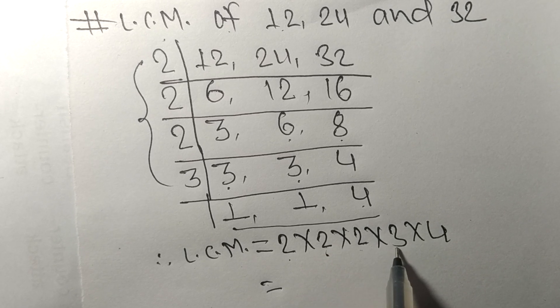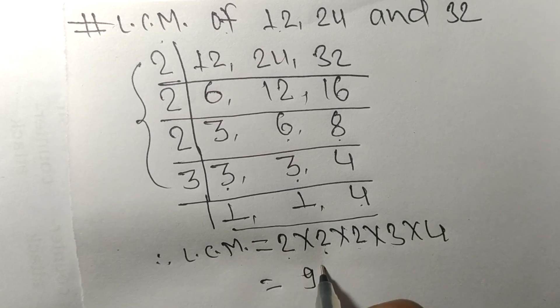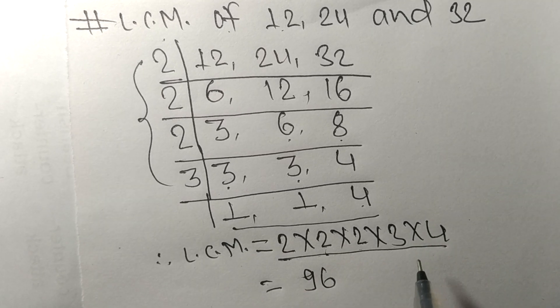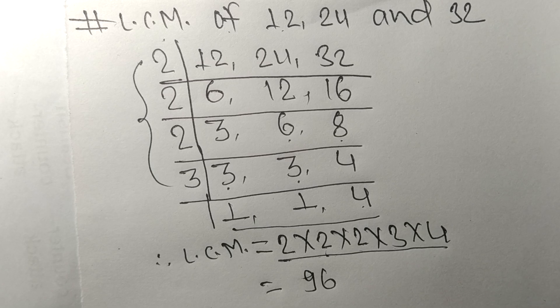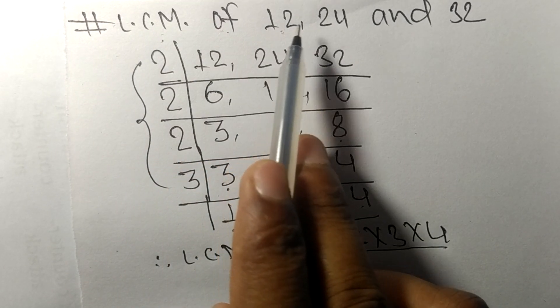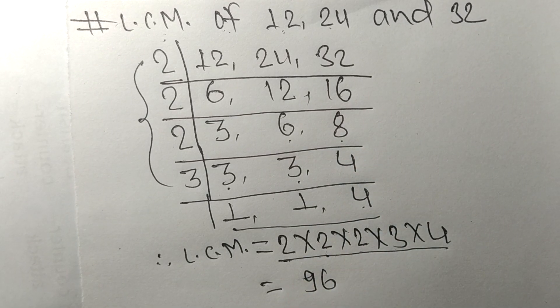8 times 3 equals 24, 24 times 4 equals 96. So by multiplying all these numbers we got 96. So 96 is the LCM of 12, 24, and 32.